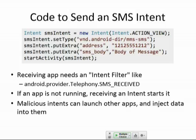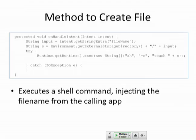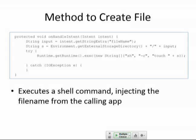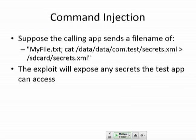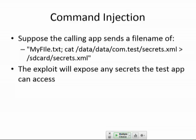Here's an app that saves files on the SD card. It listens for a FileCreatorService intent and does an exec of a shell command: 'sh -c touch <filename>'. This is exactly the kind of dangerous code that leads to code injection vulnerabilities. The Java code creates a line of shellcode and executes it, taking a parameter called 's' from the intent as the filename. All you have to do is pass in 'myfile.txt; <malicious command>' and it will create the file, then execute the second command and dump out secrets. This is a simple command injection — the semicolon is misinterpreted as a command separator, not part of a filename.